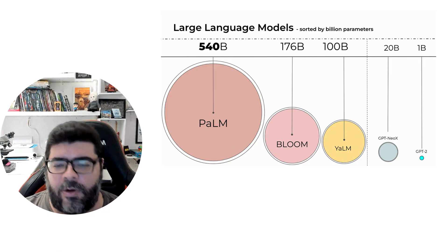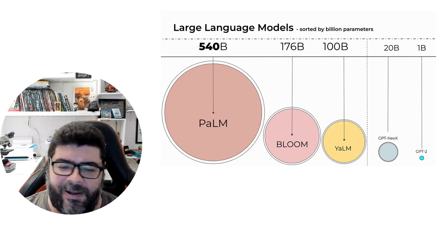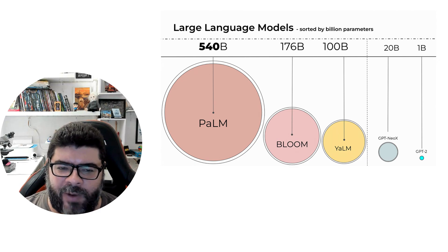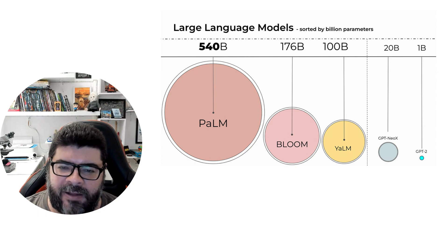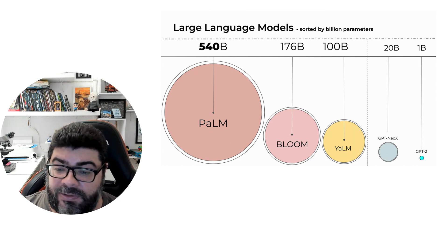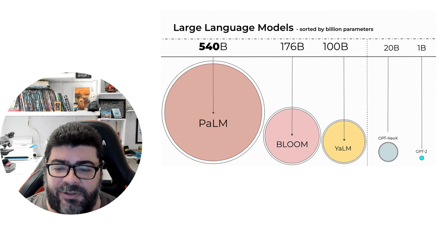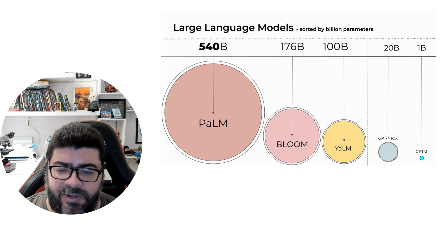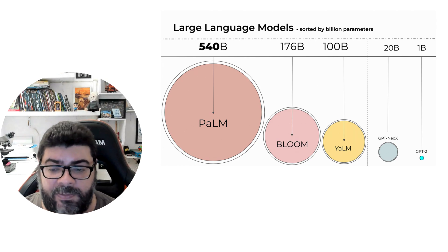Using large language models is a hard task. One reason is because you have a large number of parameters. As you can see in the graph on the right, PaLM has 540 billion parameters and BLOOM has more than 176 billion parameters. So using large language models requires large capacity hardware and large capacity memory.